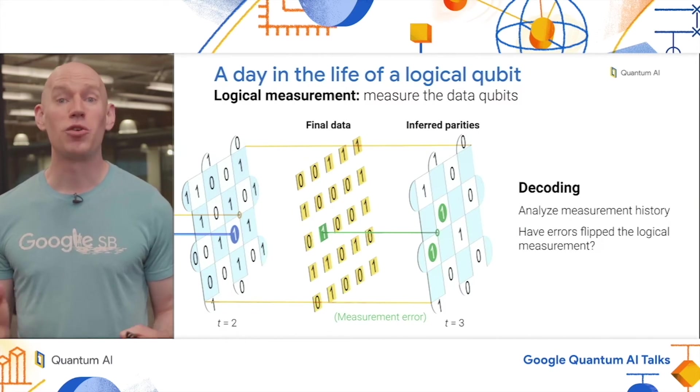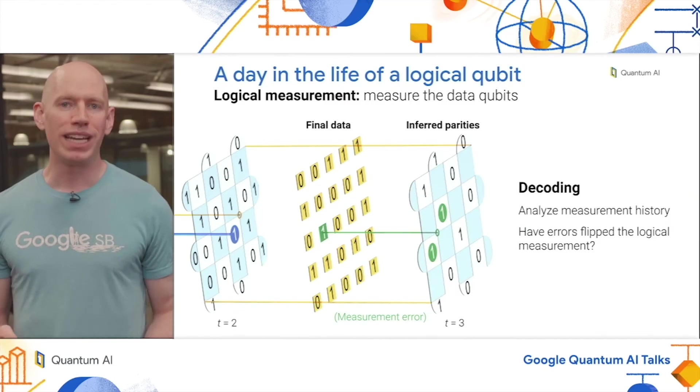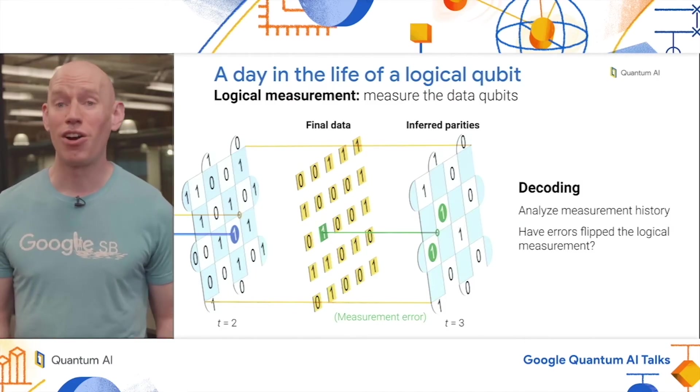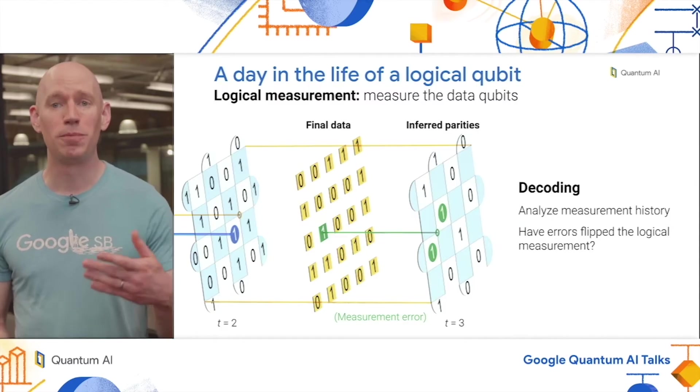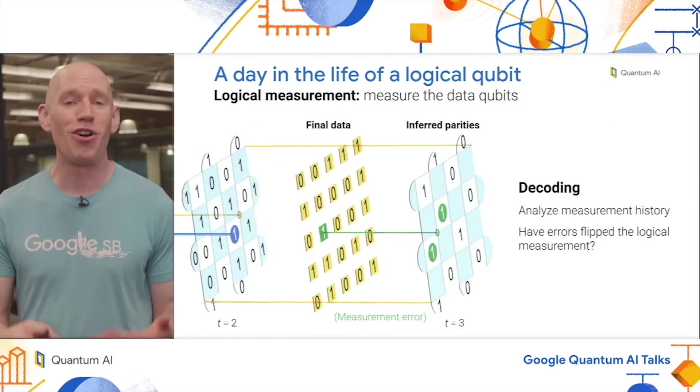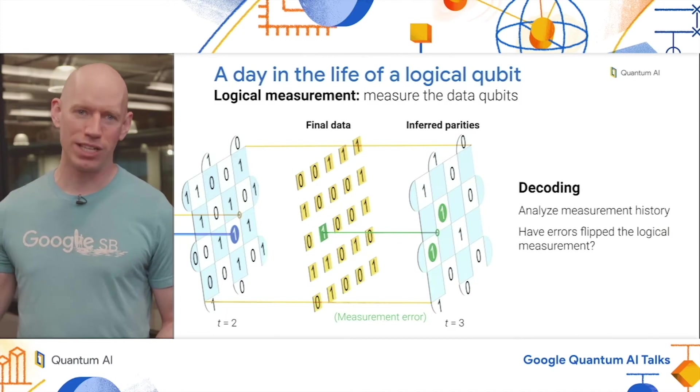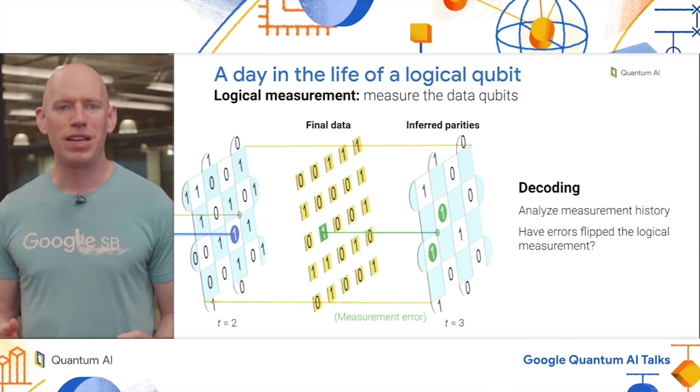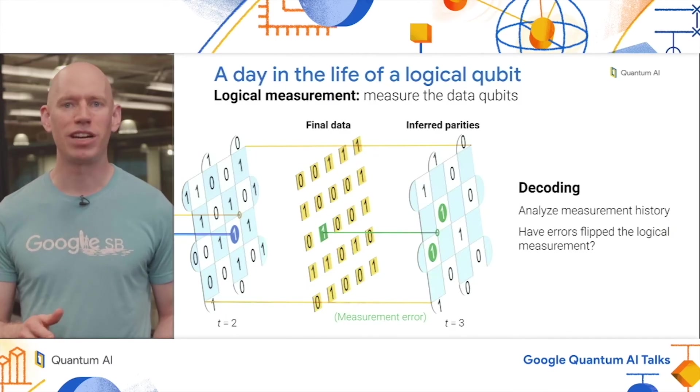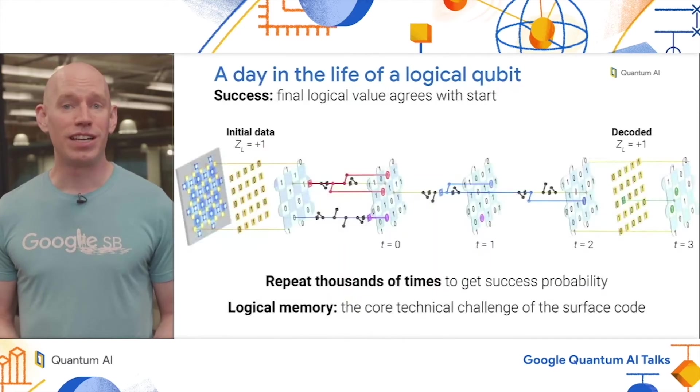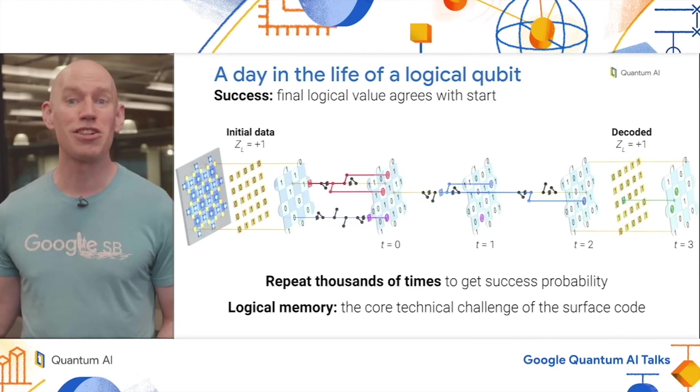At the end of this experiment, we perform a logical measurement, which is simply measuring all the data qubits at once. We can get one last piece of information from these inferred parities of the final measured bits. That lets us check in case there was some measurement error on one of the data qubits at the end. Once we've measured all these ones and zeros, we want to evaluate the corrected logical operator. The process for that is called decoding, where we analyze this whole history of measurements and ask the question, have any errors happened that would have flipped around the logical measurement. Taking that into account, we can arrive at a final corrected logical measurement. The success criterion is that this final corrected or decoded measurement agrees with the initial state that we know that we put in.